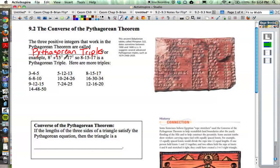Over on the right-hand side of your sheet, notice there is an example of an ancient Babylonian tablet. This ancient Babylonian tablet called Plympton 322 dates sometime between 1900 and 1600 BCE. It suggests several advanced Pythagorean triples, such as 1,679, 2,400, and 2,929. So Pythagorean triples were discovered quite a while ago, up to at least 4,000 years ago, where right triangle characteristics were used.